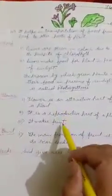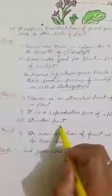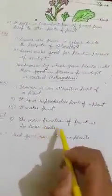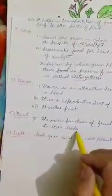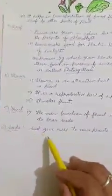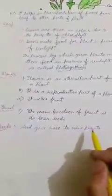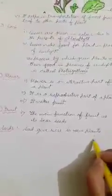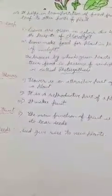Next, the flower: the main function of the flower is to make the fruit and it is the reproductive part of the plant. Then, fruit: the main function of fruit is to bear the seed — some fruits have one seed and some have more seeds. The seeds give rise to new plants. That's all about the function of the parts of the plant. Thank you.